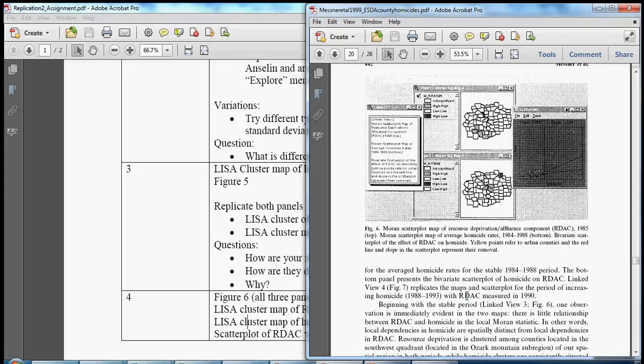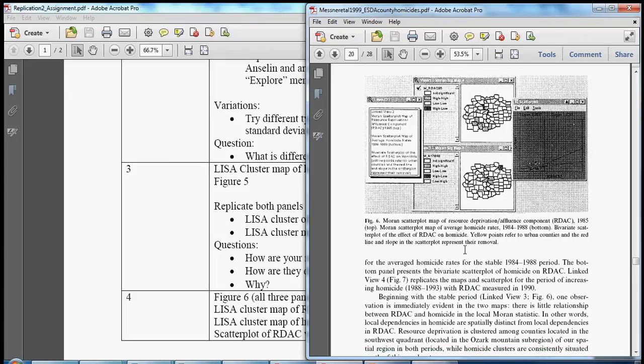Hopefully this is encouraging to go back to the earlier exploratory publication and realize that a lot of this is familiar ground. Maybe that's encouraging as you are learning these new techniques. So let's replicate figure six here. In the top map we have a LISA cluster map of resource deprivation affluence in 1985. In the bottom LISA cluster map we have the homicide rates for 84-88. And then we have a bivariate scatter plot with resource deprivation affluence along the horizontal axis and homicide rates along the vertical axis.